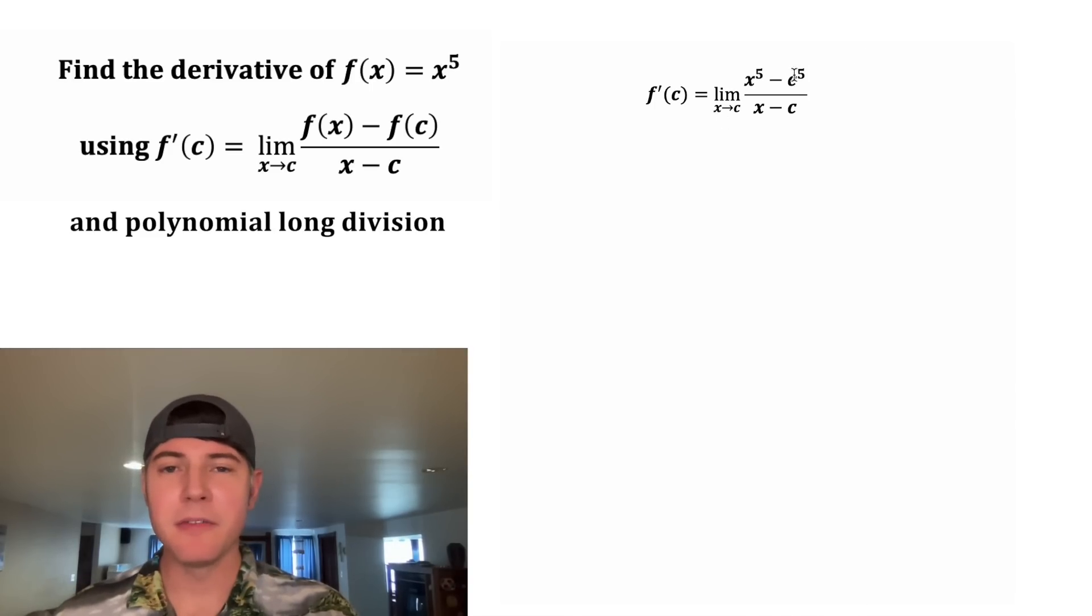So now we want to take the limit of (x^5 - c^5)/(x - c). There's a couple of different ways to do this, but they're asking us to use polynomial long division. So let's do that.